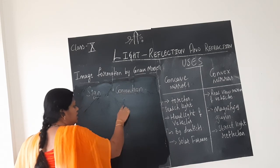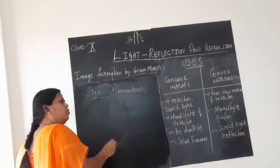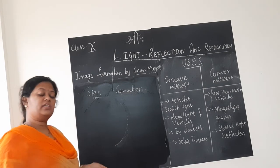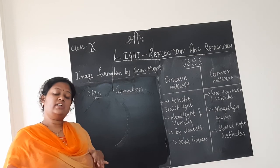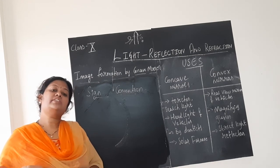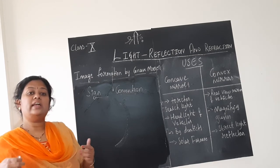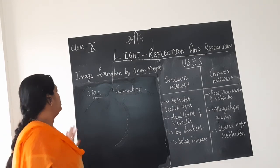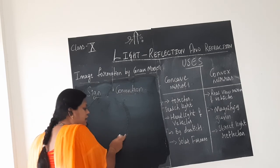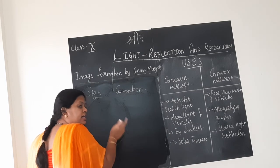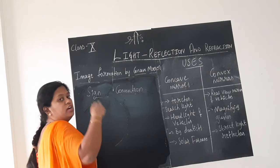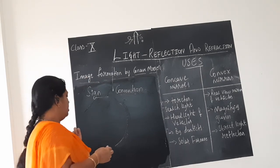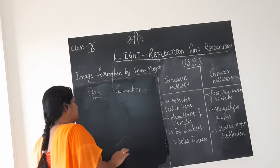Sign convention — that is, some rules need to be followed. You know the basic diagram, and I will draw that. This applies both to concave mirror and convex mirror. But in further classes, we will be studying about the lens as well. This will be applied to lens also. So understand it clearly here itself, so that it will be helpful for you in further classes.